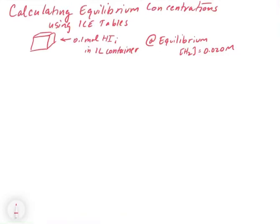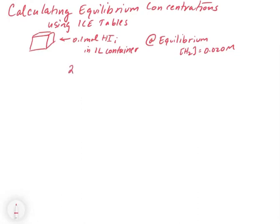In this video, we're going to look at how we can use something called an ICE table to calculate equilibrium concentrations, given some information about the equilibrium. As our first example, we're going to take our prior example where we had the reaction of 2HI gas going back and forth with H2 gas plus I2 gas.